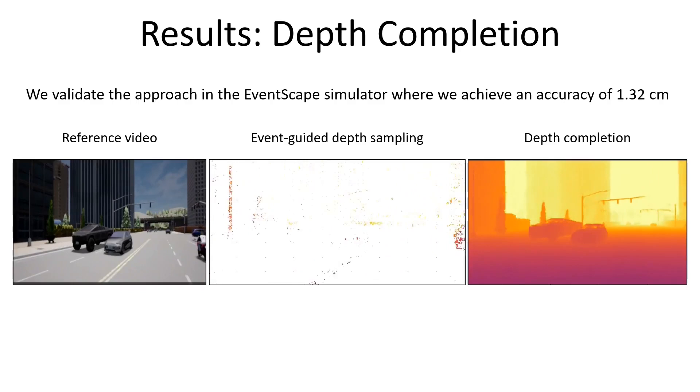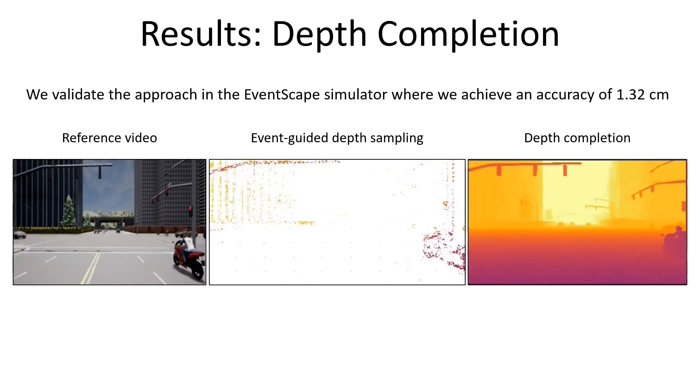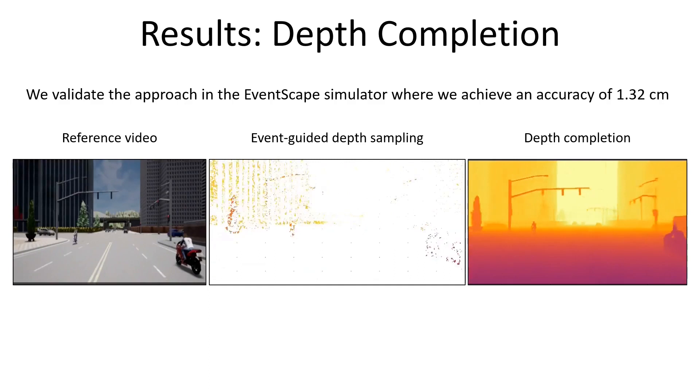Lastly, we ask the question: can we recover the dense depth from sparse event-guided samples? To answer this question, we train a network to predict dense depth from sparse depth samples and events. We evaluate this network on the Eventscape dataset and achieve an average error of 1.32 centimeters. We now show some qualitative examples of the depth completion.